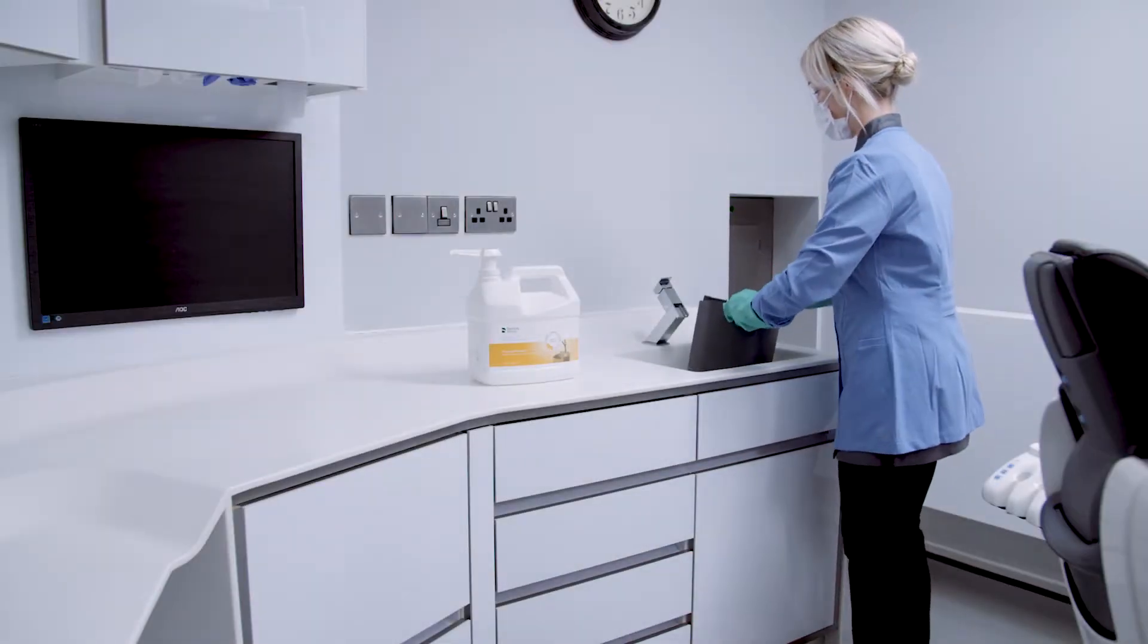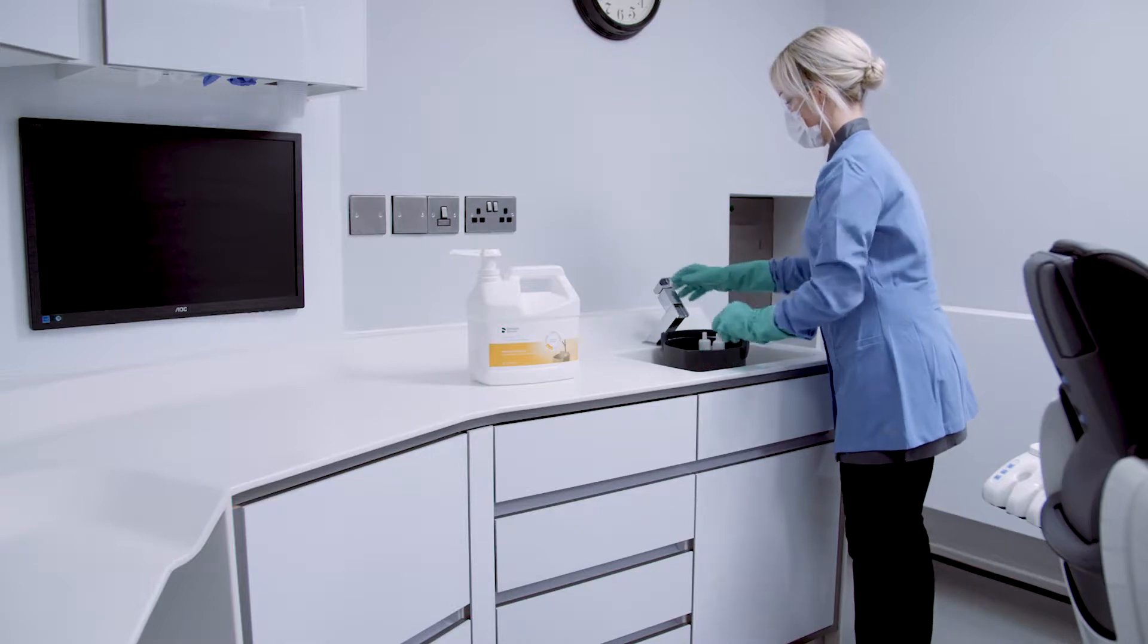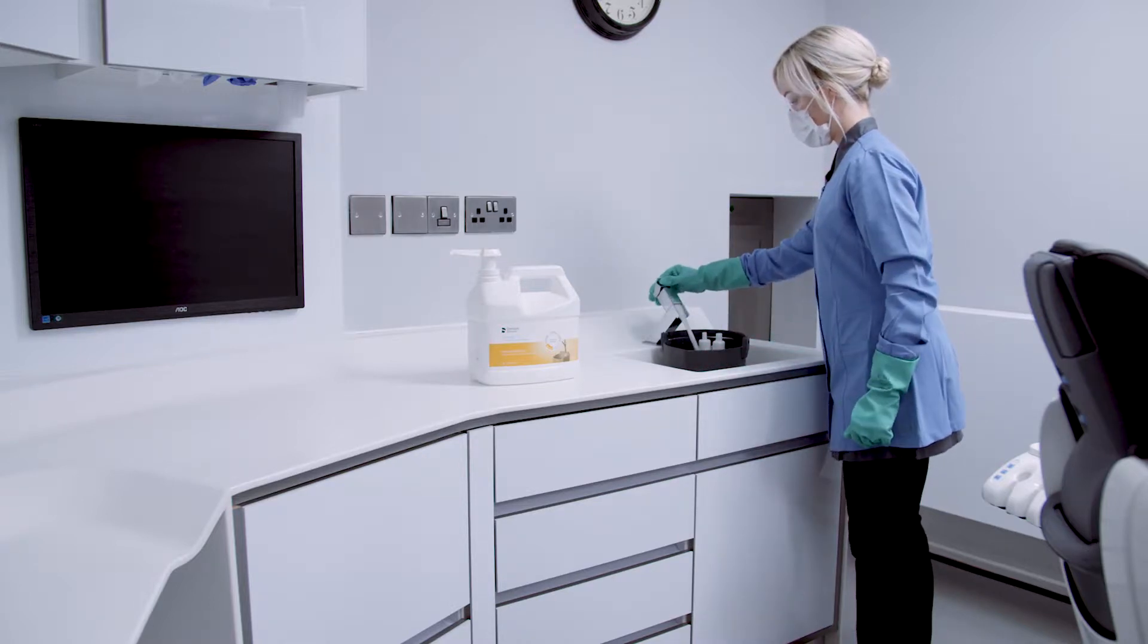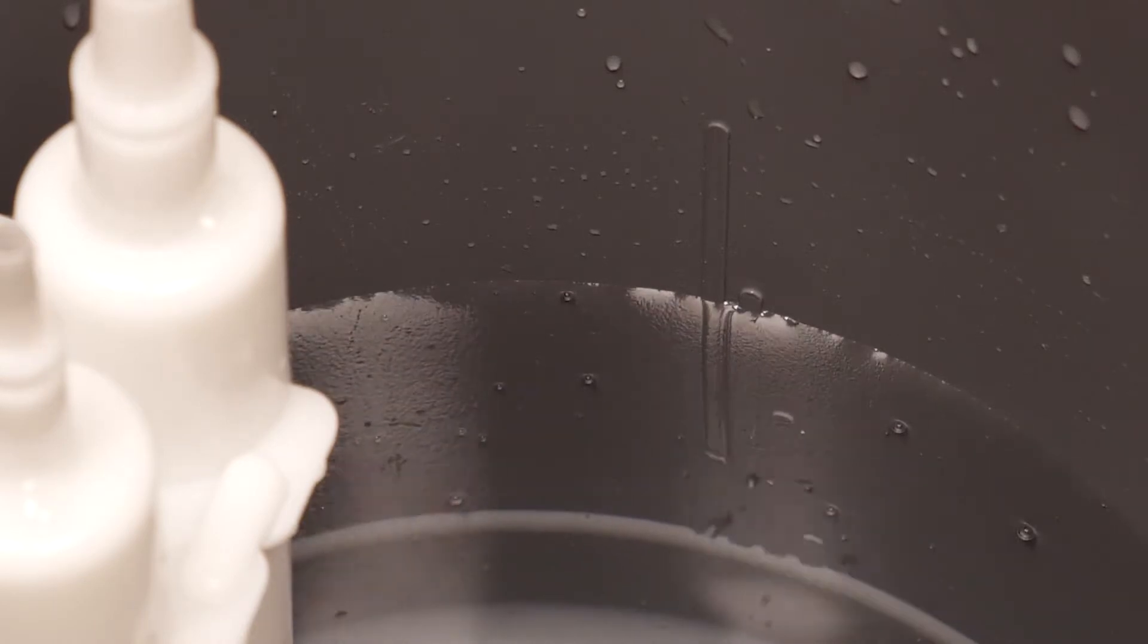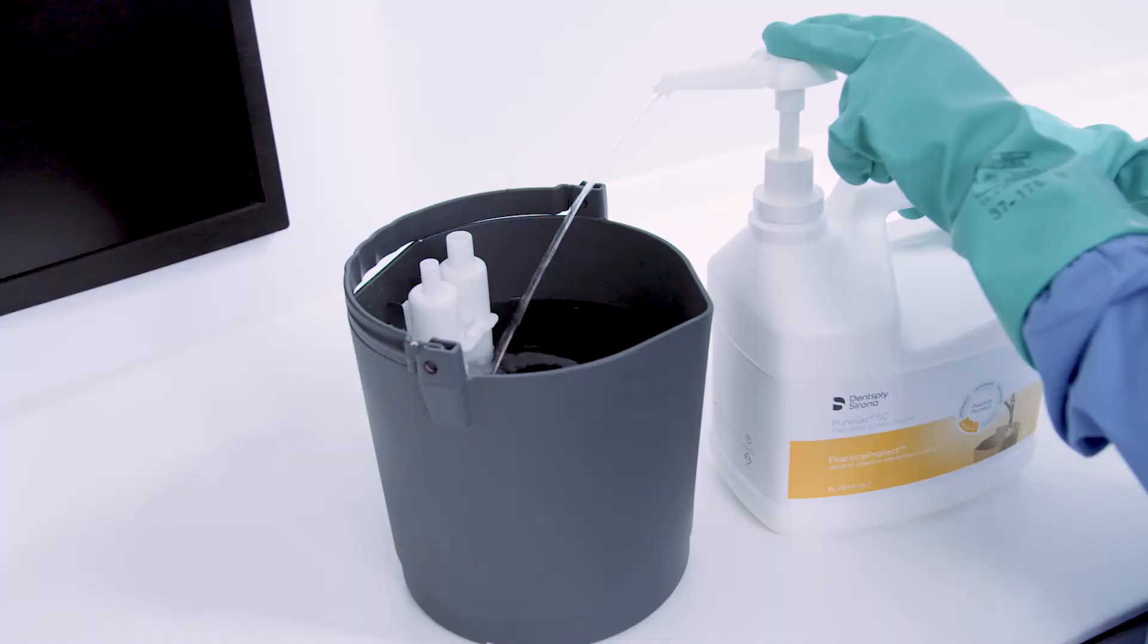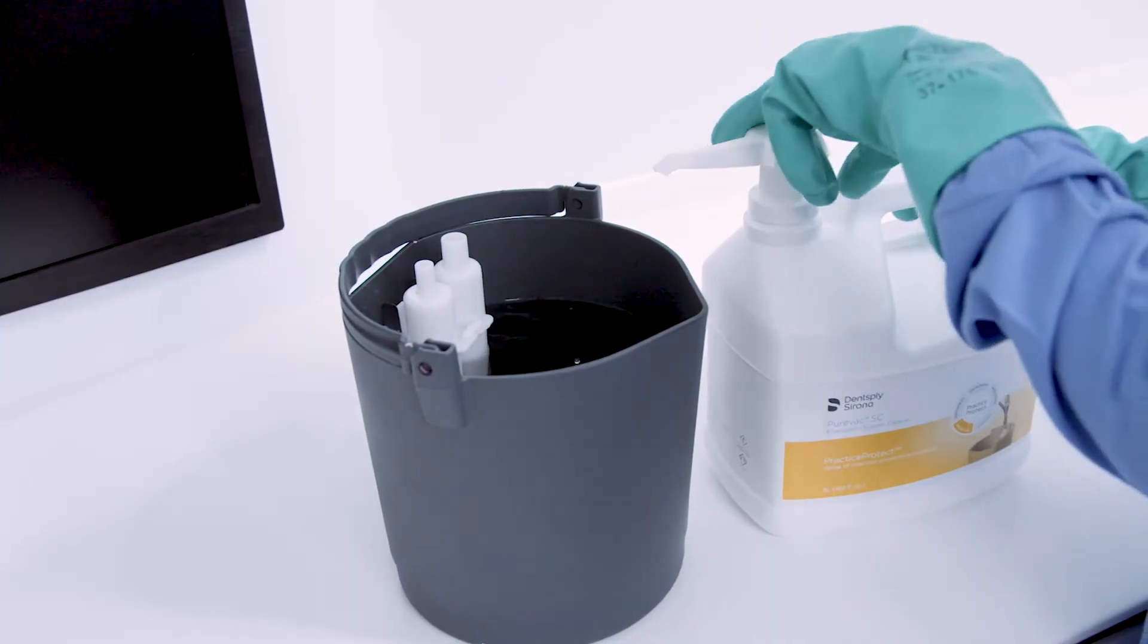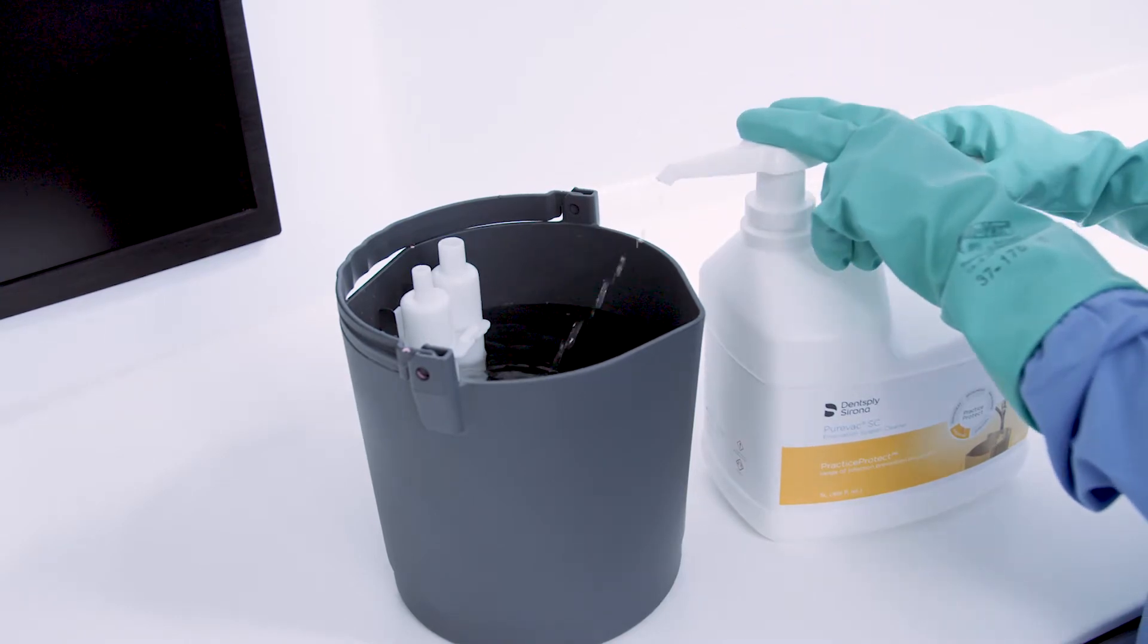At the end of each day, begin by filling the dispenser with one quart of water per operatory. The dispenser has markings that indicate proper water level for a total of four operatories. Press the pump on the PureVac SC container one time for each operatory to dispense the proper amount of cleaner into the dispenser.